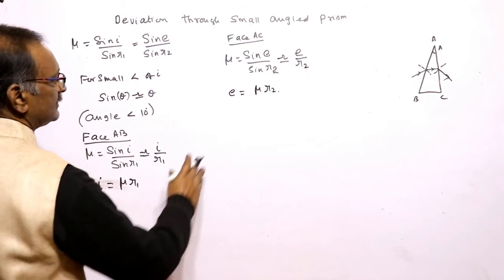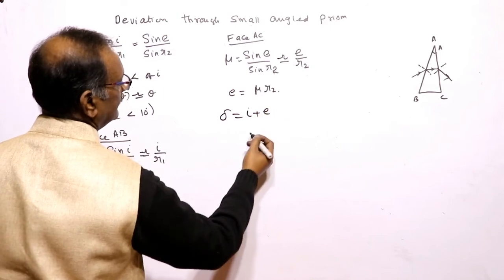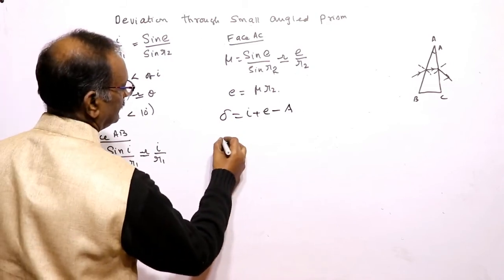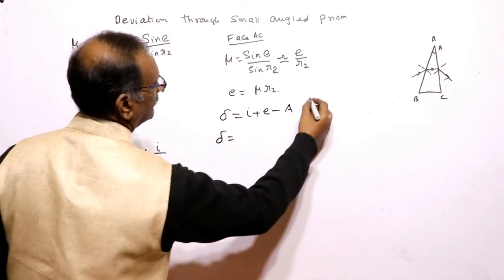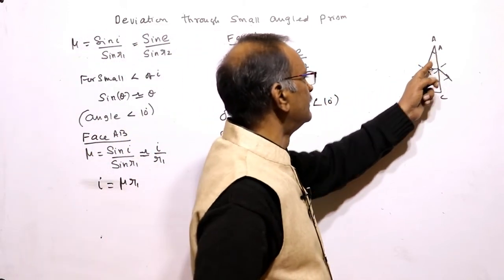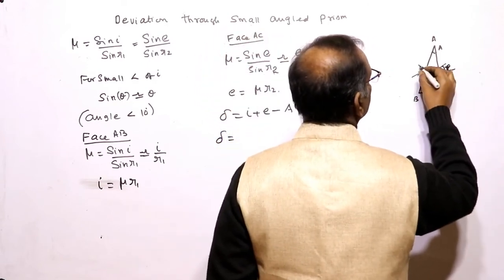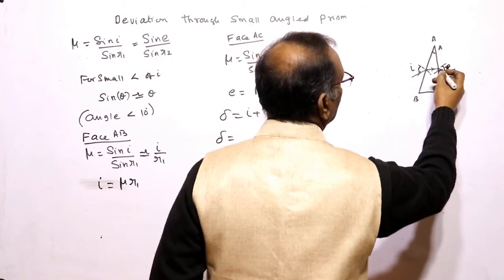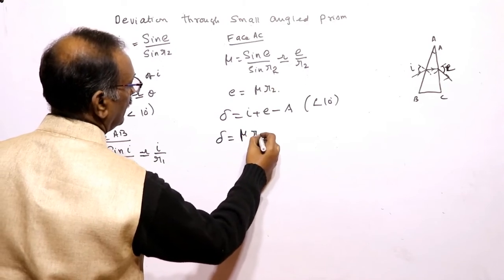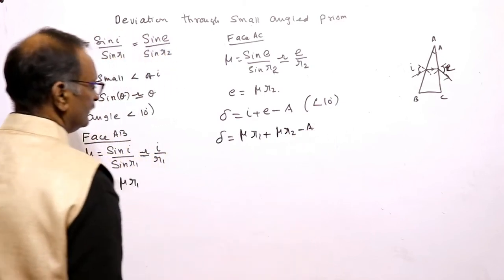The general expression for angle of deviation is delta equal to I plus E minus A, where I is equal to mu R1 and E is equal to mu R2. For small angle prism, A is small, so substituting: delta is equal to mu into R1 plus mu into R2 minus A.